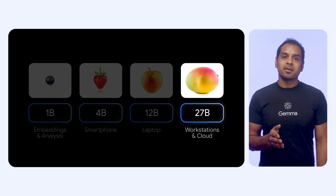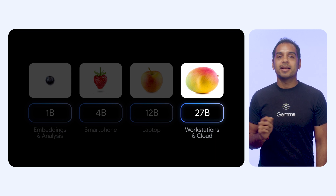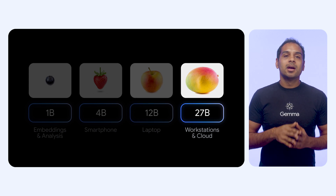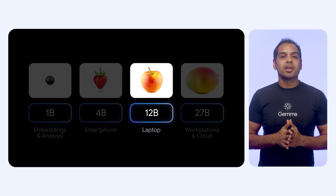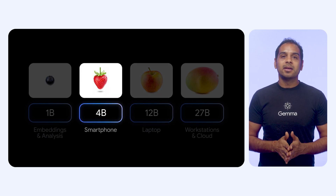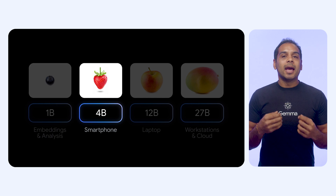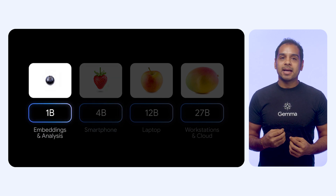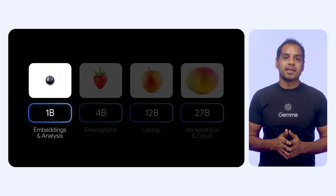The 27B model is designed to run in a single-node server or a high-end desktop. The 12B model is designed to run in a high-end laptop. The 4B model is ideal for a high-end mobile device or laptop. And we have a 1B text-only model that's optimized for resource-constrained devices.